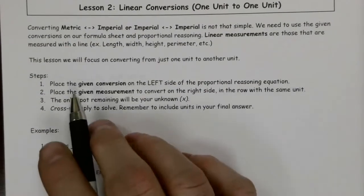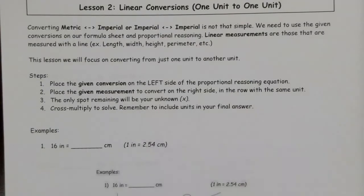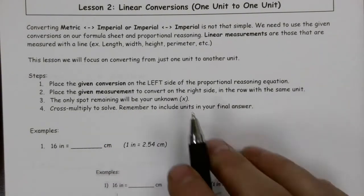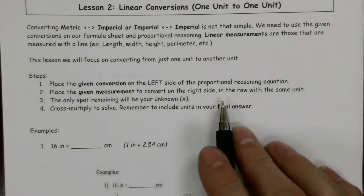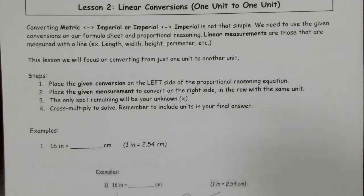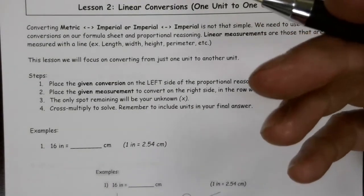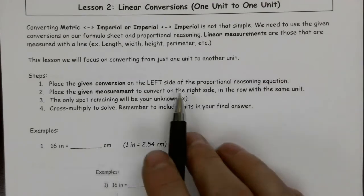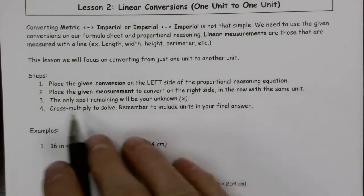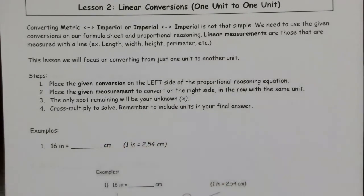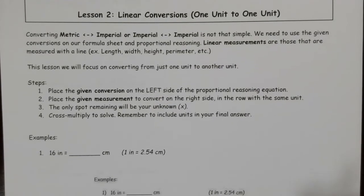So what we're going to do is take the given measurement and, just to give you a structure, we're going to put the given conversion on the left. Then we're going to place the measurement to convert on the right-hand side of our proportion. There's going to be only one unknown in our proportion, because the given conversion should have the unit we're going from and the unit we're going to. The measurement we're given will be only one of those. So in that proportion there's one unknown, and we're going to cross-multiply — and in some cases also divide — to get our final answer. If that doesn't quite make sense, let's go through a handful of examples.